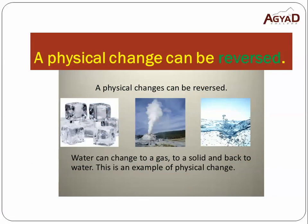A physical change can be reversed. 'Reversed' means you can return to the original substance. For example, if you have liquid water and heat it, it will evaporate. If you condense the water vapor, it will change into water again. If you take the water and put it in the freezer, it will freeze into ice. If you take the ice and leave it in the sun, it will melt and turn into water again — the original substance. So the physical change can be reversed; it is only a change in shape.